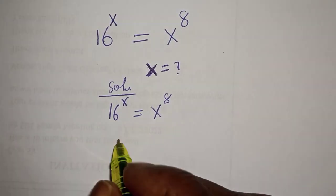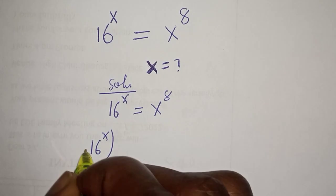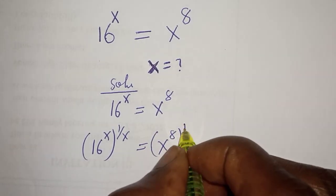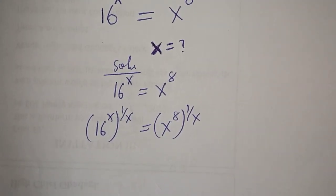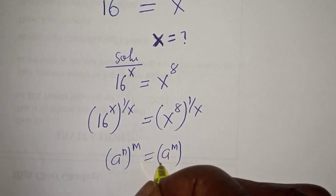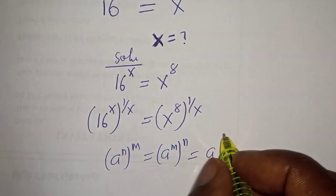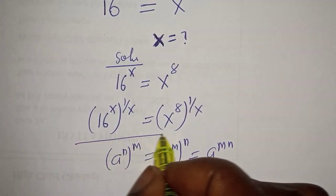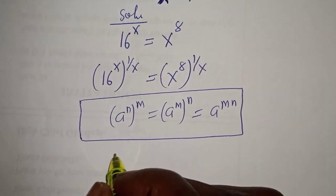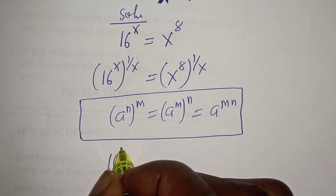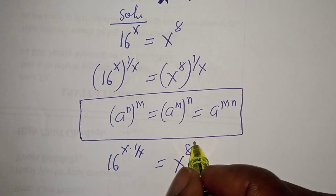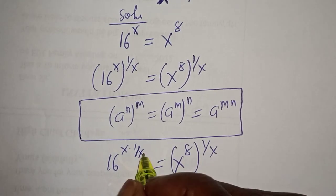Let's multiply the exponent of both sides by 1 over s. That is, 16 raised to power s, to the power of 1 over s, is equal to s raised to power 8, to the power of 1 over s.